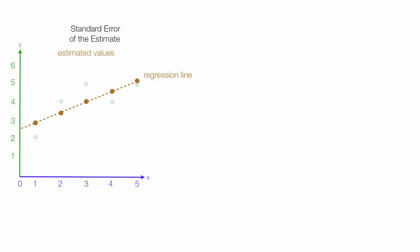These are my estimated values. Then I compare my estimated values to my actual values. Estimated values are the brown and the green are the actual values.